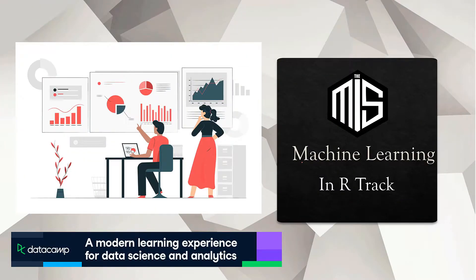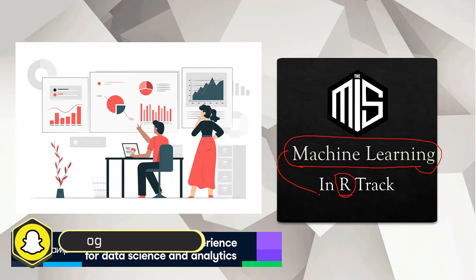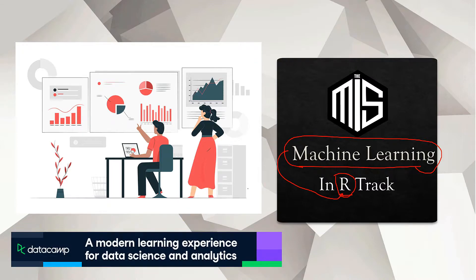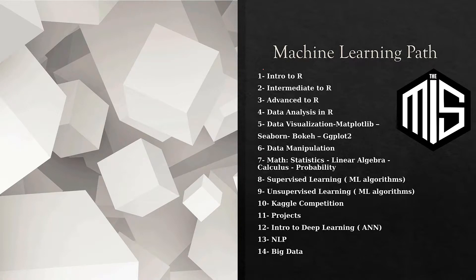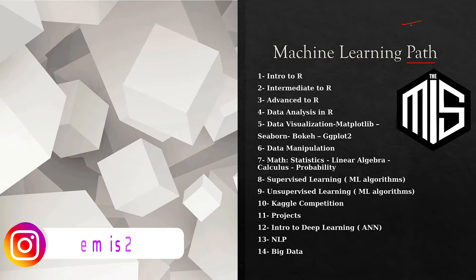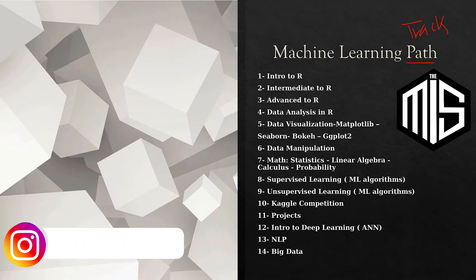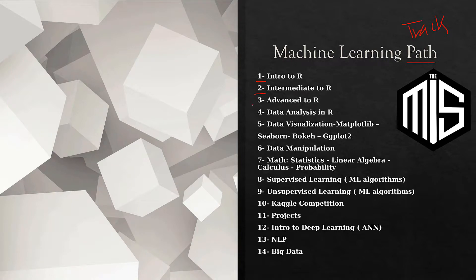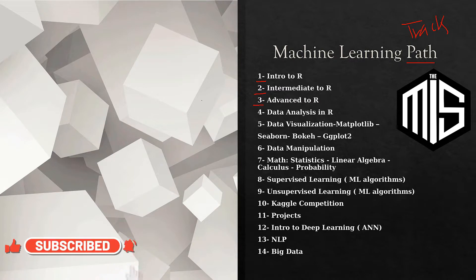Since we are going to learn machine learning in R, this track should give me at least some courses in R, some theoretical courses in machine learning, and then some courses combining both. A track is basically a bunch of courses in sequence — you take the first course, then the second, then the third, and so on.